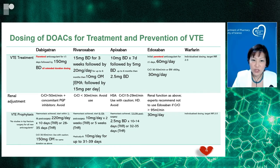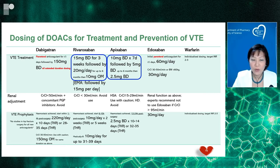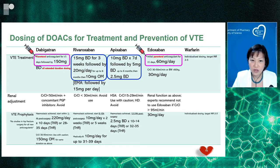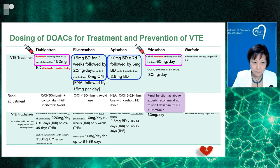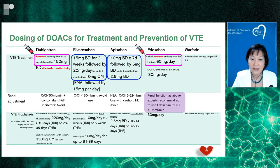For VTE treatment and prevention, rivaroxaban and apixaban use an induction dose when starting therapy. Dabigatran and edoxaban require initiation with parenteral agents overlapping for about five days before transitioning to oral monotherapy. For edoxaban in VTE, there is labeling that it is not recommended in patients with supranormal creatinine clearances above 95 mL/min — we will explore this further.